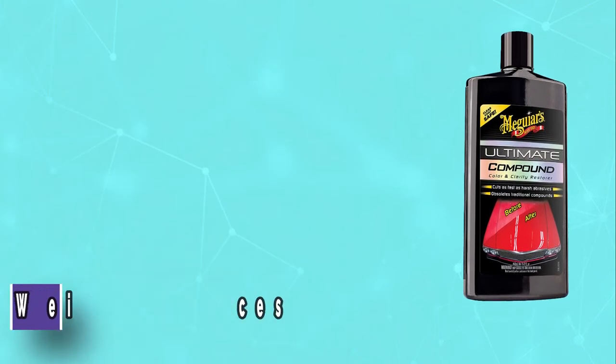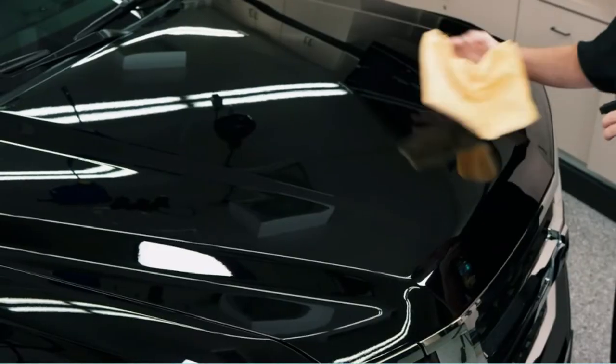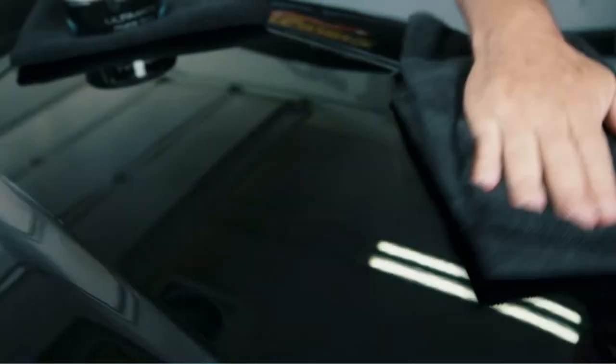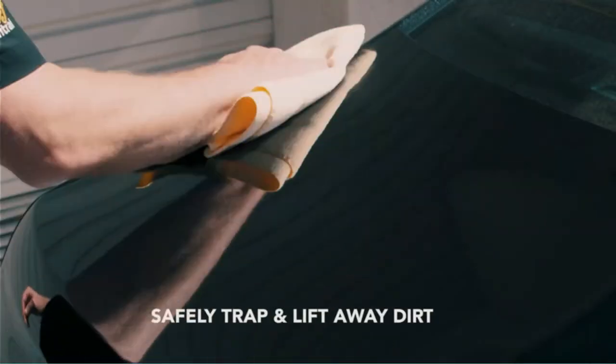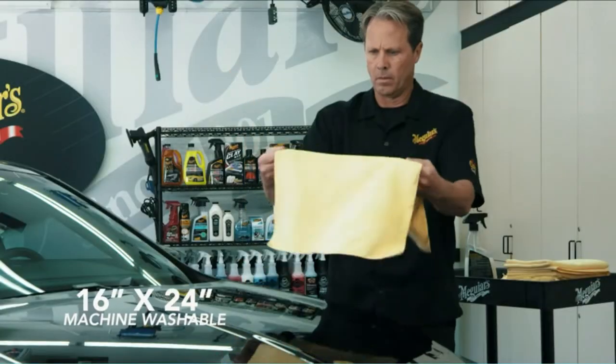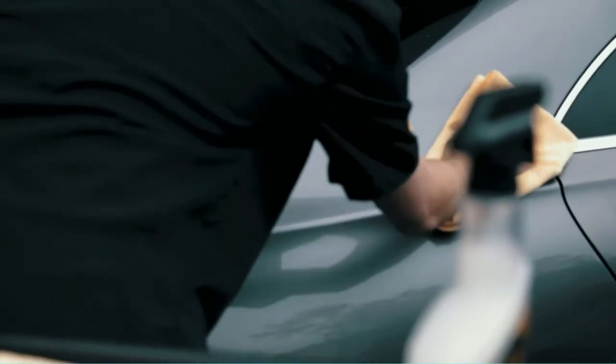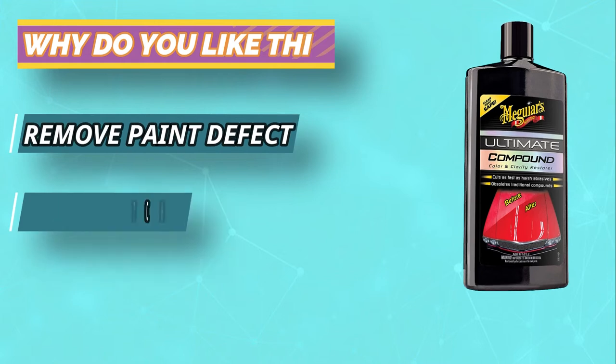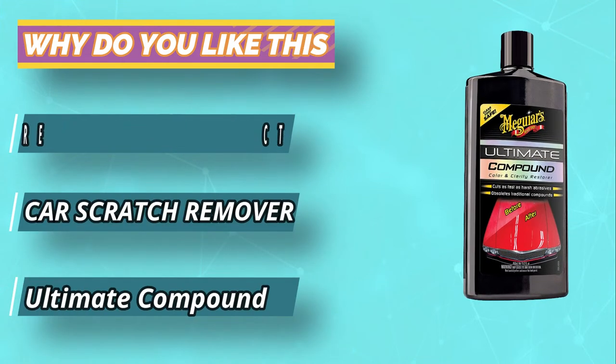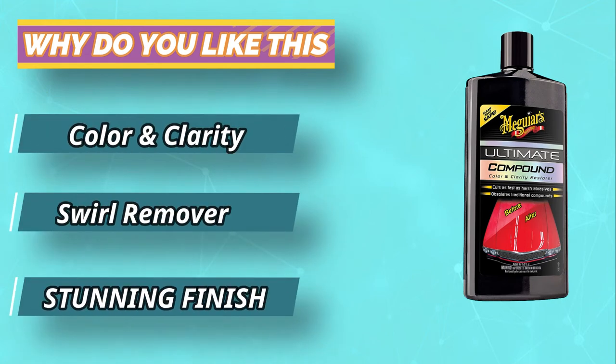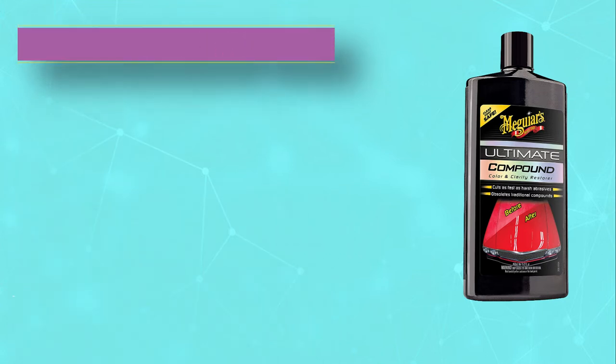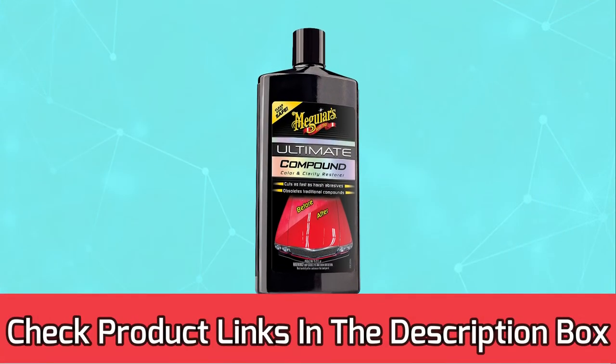Unlike traditional compounds that can leave behind fine scratches and haze, Meguiar's Ultimate Compound cuts so fast and leaves the finish looking so good, it's hard to believe possible. The secret is Meguiar's exclusive micro-abrasive technology created for state-of-the-art products for body shops and detailers. Ultimate Compound works quickly to remove below surface defects and restore color and clarity without scratching or swirling.